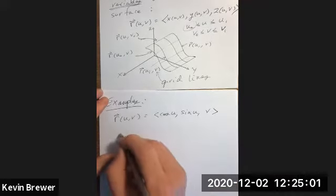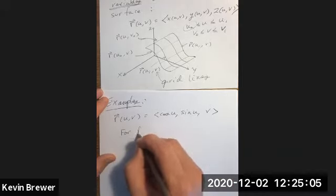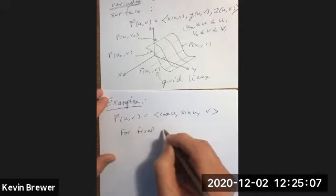So how about r of u, v equals cosine u, sine u, and v. Let's see if we can figure out what this surface would look like. A good way to get a sense of what the surface looks like, without asking a graphing utility or computer algebra system to do it for us, is to think in terms of these grid curves or grid lines.